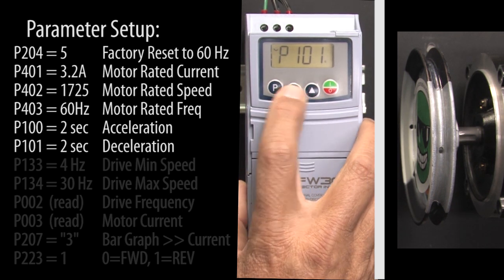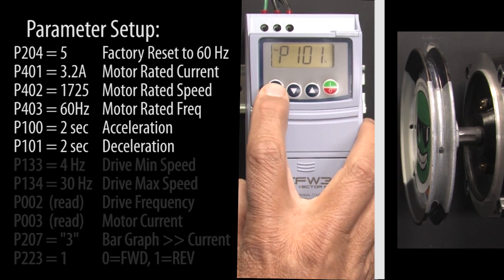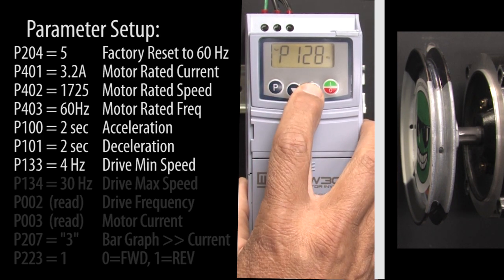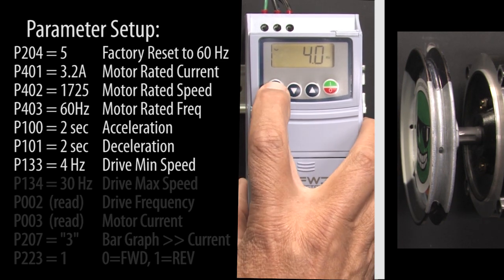Scroll to the next parameter on our list, hit P and change the deceleration to 2 seconds and hit P to accept that. Scroll to the min speed parameter, let's make that 4 Hz. Hit P to accept that.